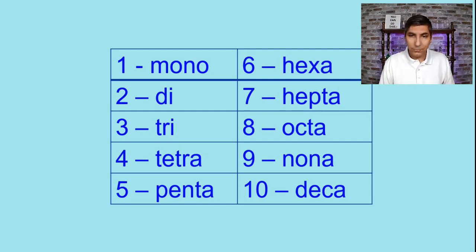So one is mono, two is di, three is tri, four is tetra, five is penta, six is hexa, seven is hepta, eight is octa, nine is nana, and ten is deca. Now there are some prefixes that go beyond ten, but in first-year honors chemistry, normally we don't go beyond the prefixes for ten.